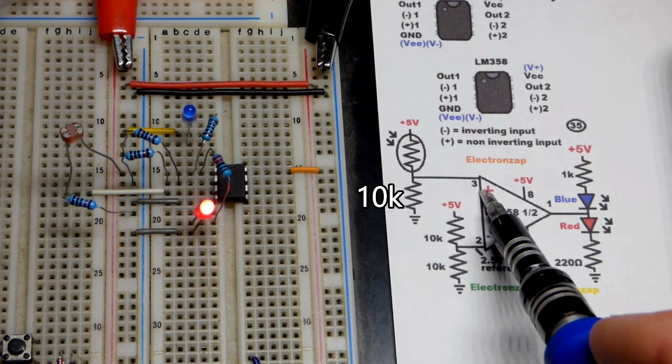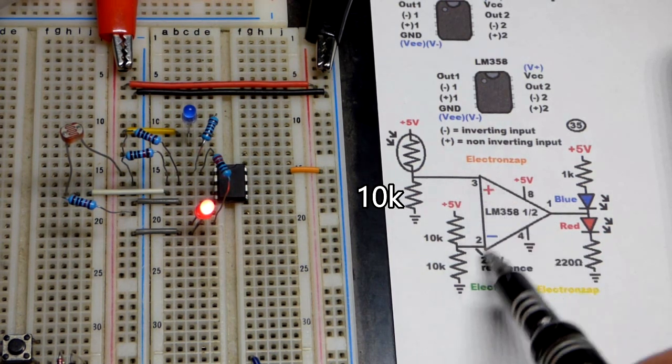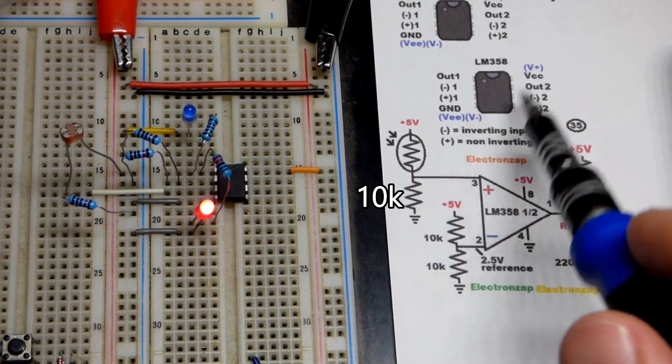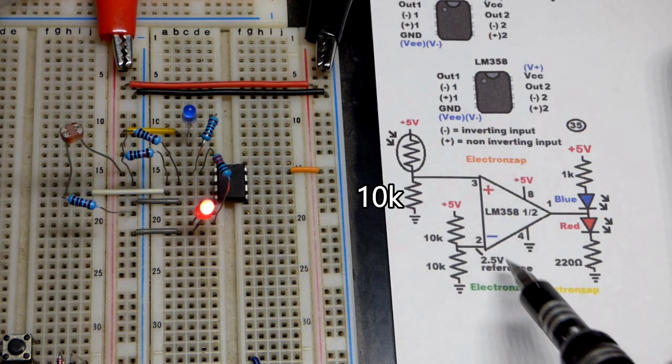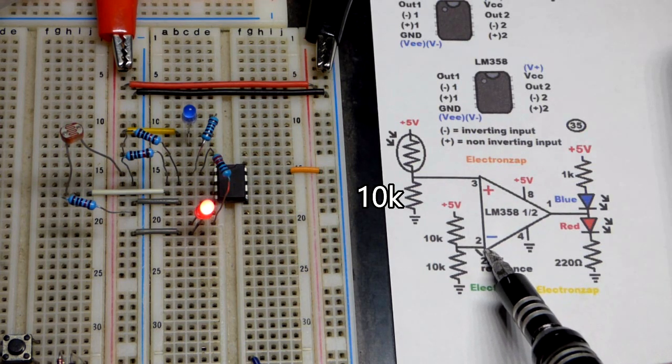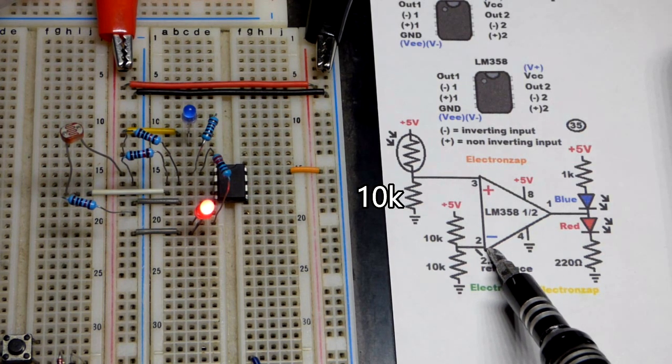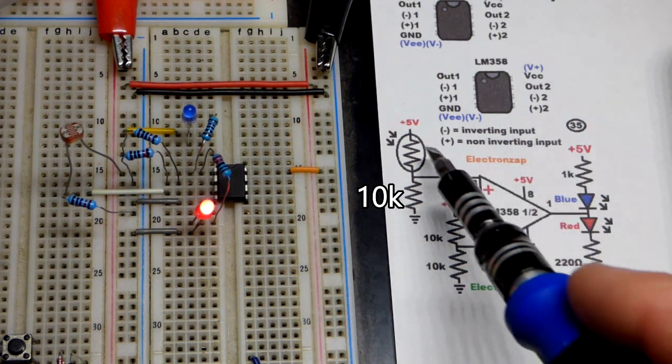You can see that I swapped the position on the schematic from the physical component. You always have to make sure you wire it to the right one, no matter which one's higher on the schematic. We've got our fixed voltage there, which we can adjust to change the light sensitivity.